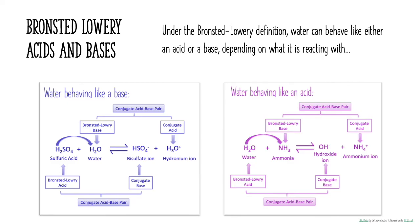Under the Bronsted-Lowry definition, water can behave like either an acid or a base depending on what it's reacting with, which means water is what's called amphoteric. On the last slide we saw water behaving like an acid. Now let's look at an example where water is behaving like a base. Here I have sulfuric acid, and sulfuric acid is donating one of its hydrogens to water this time — so water is being the hydrogen ion acceptor, behaving like a base. Once water accepts that hydrogen ion, it becomes the hydronium polyatomic ion. Water and the hydronium ion form a conjugate acid-base pair.